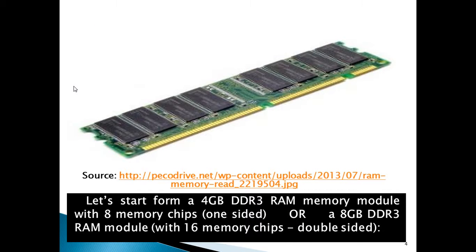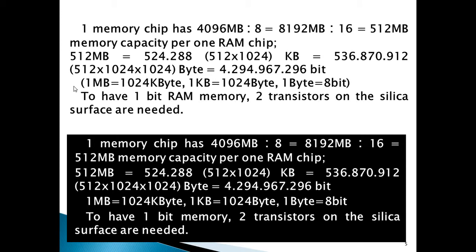Let's start from a 4 GB DDR3 RAM memory module with 8 memory chips — meaning one-sided — or an 8 GB DDR3 RAM module with 16 memory chips, double-sided. One memory chip has 4096 MB divided by 8, which equals 8192 MB divided by 16, equaling 512 MB memory capacity per one RAM chip. 512 MB is about 524,000 kilobytes, about 536,000,000 bytes, and about 4.3 billion bits.